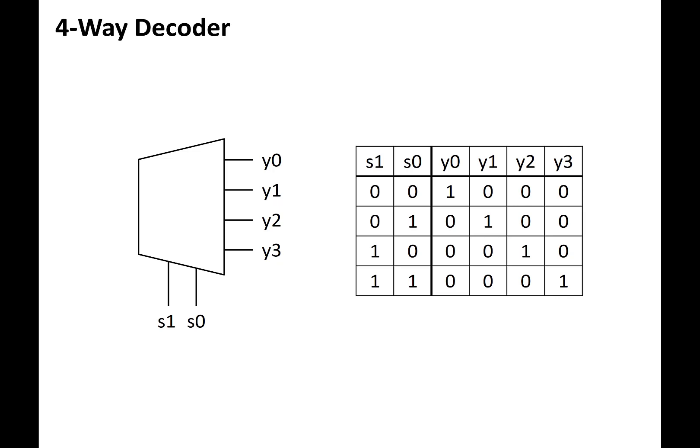A four-way decoder is a component that has four outputs and two select lines. Depending upon the value of the select lines, exactly one of the outputs will be asserted to be a 1, while the others are asserted as 0.